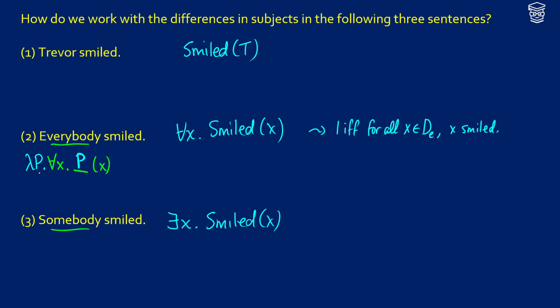For 'somebody smiled,' it's going to be very similar. For 'somebody,' we want: exists X, then a predicate there, and then another X. So we're going to do the same thing — just abstract it with a function and we'll be able to apply our verb phrase to it.